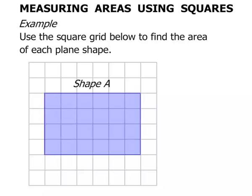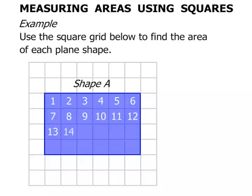For shape A we've got a rectangle. So let's just start by counting the squares it's covering the area. 1, 2, 3, 4, 5, 6, 7, 8, 9, 10, 11, 12, 13, 14, 15, 16, 17, 18, 19, 20, 21, 22, 23, 24.